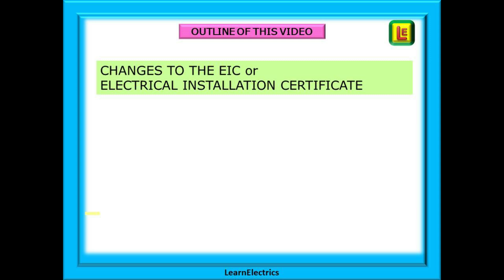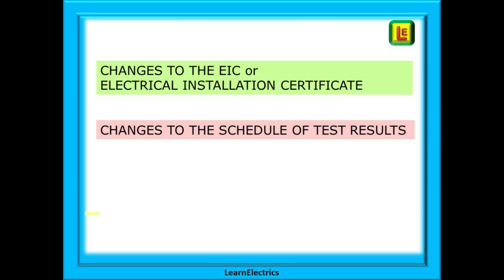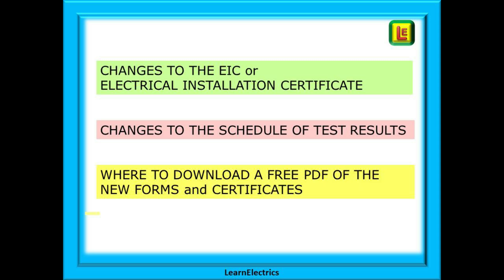We will begin by looking at the changes to the Electrical Installation Certificate or EIC. Then we will move on to the changes that have been made to the schedule of test results. And finally, we will show you where to download a free printable PDF of all the forms and certificates that can be used for your own business, the so called Model Forms.